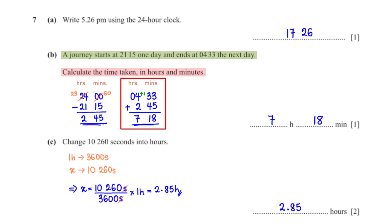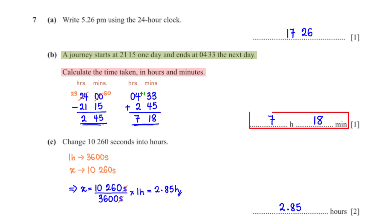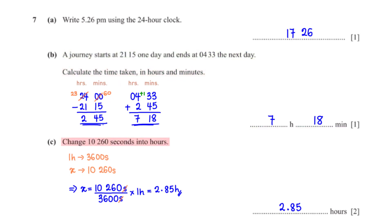To get the total time duration we add 2 hours 45 minutes to 4:33. Under the minute column, 33 + 45 = 78; 60 minutes = 1 hour, so we add 1 to the hour column and keep 18 minutes. Under the hour column, 1 + 4 + 2 = 7. So the total time is 7 hours 18 minutes.